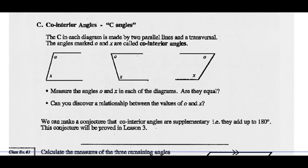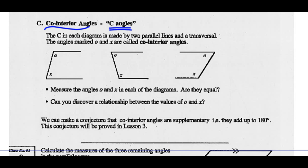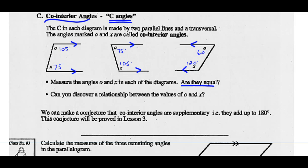The last pattern we're going to look at: co-interior angles, or the C pattern. The C in each diagram is made by two parallel lines and a transversal. The angles marked O and X are called co-interior angles. Measure angles O and X in each diagram and find out if they're equal. Measuring them: the first one has O as 105 and X as 75; the second has O as 75 and X as 105; the third has O as 60 and X as 120. They are clearly not equal.